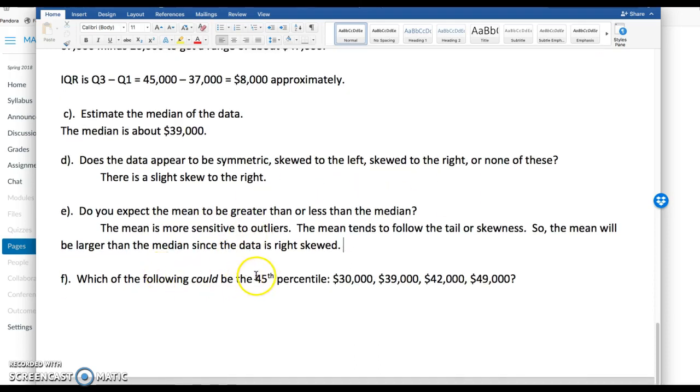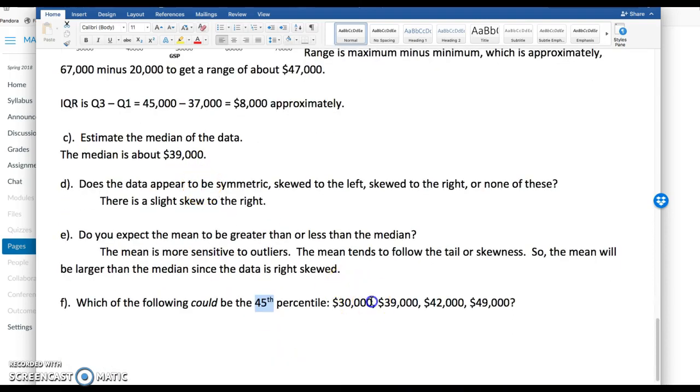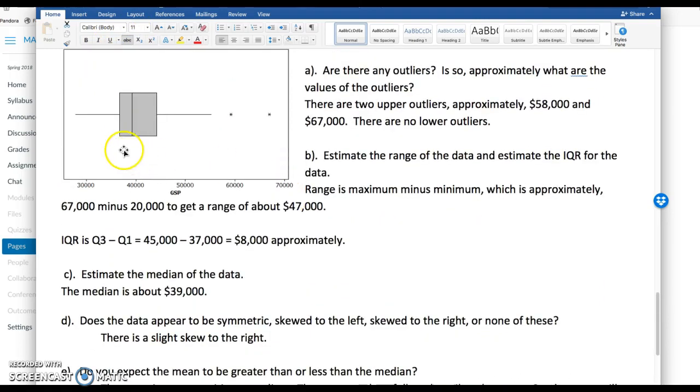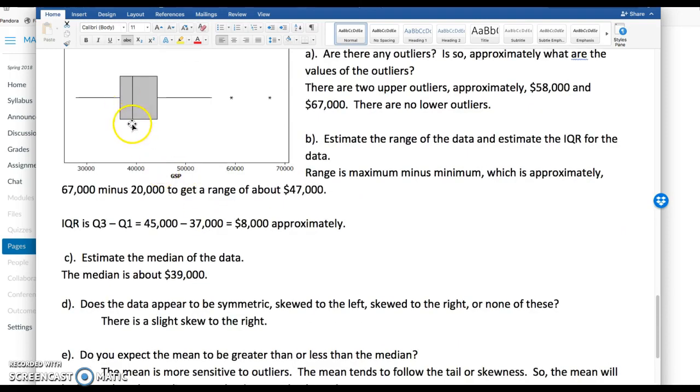And the last question, what could be the 45th percentile? Out of these options, 30,000, 39,000, 42,000, 49,000. I like these questions because we should be able to eliminate these, which is a good way to approach these. Again, the 50th percentile is the median. That's right about here. This is the 25th percentile. So the first option they give us is 30,000. It can't be 30,000. 30,000 is way too small to be the 45th percentile. 30,000 is way down here. This is less than 25th percentile. Next option is 39,000. Again, that's what I approximated the median to be. Okay, well, let's keep that there for right now.